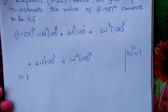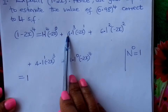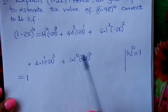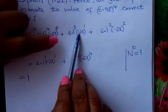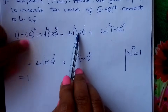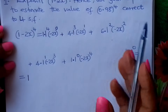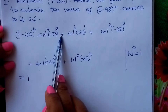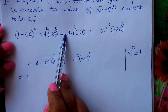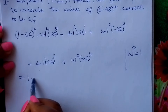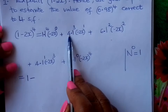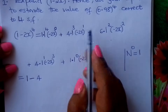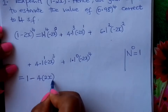So our first term is 1. For the second term, we have 4 times 1 raised to 3, which is 1, times (negative 2x) raised to 1. Negative raised to power 1 is negative, so the whole term is negative. Positive followed by negative is negative. This gives us minus 4 times 2x.